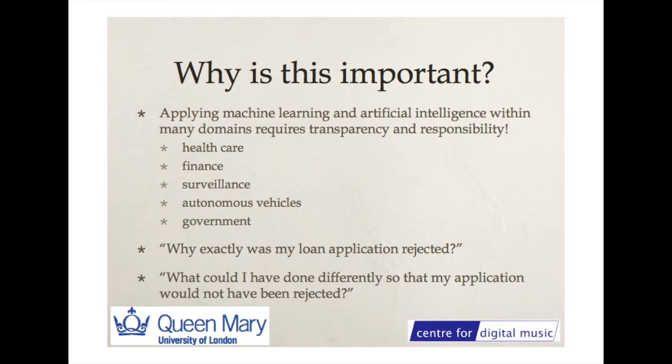Why is this important? Machine learning is being applied in many domains these days — it's being spoken about throughout the media. It's very important to have responsibility and transparency in the usage of data. In healthcare and finance, surveillance, autonomous vehicles, and governments, when you apply machine learning or formal statistics to these areas, you need to be sure that what you're measuring is the effect that you're interested in.